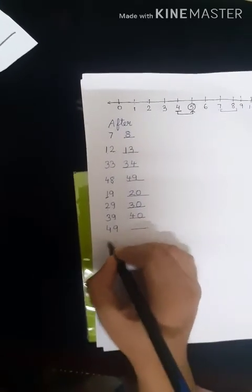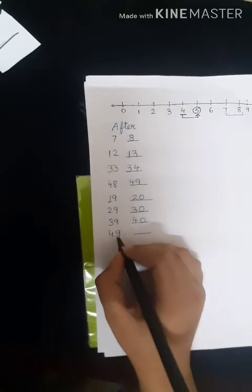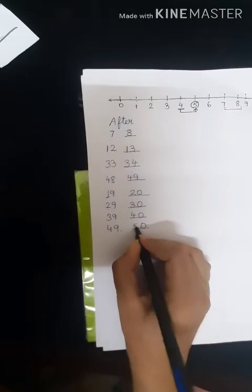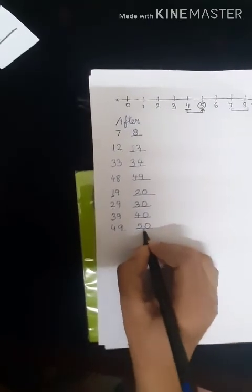Now let us look at 4, 9, 49. Now what comes after 9? 0. And what comes after 4? 5. So what is the number going to be? 50.